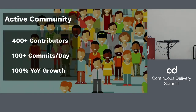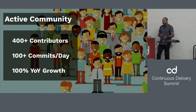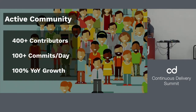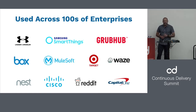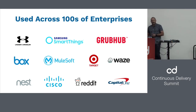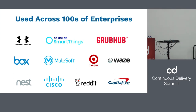A little more about Spinnaker: we have an extremely active community with over 400 contributors, mostly from cloud providers like Google, Amazon, and Microsoft. We have over 100 commits a day and are growing year over year. It's used across hundreds of enterprises. I did a keynote at the Spinnaker Summit this weekend, and on stage we also had Salesforce, Pinterest, and Airbnb — great additions to the community using Spinnaker at massive scale in the cloud.